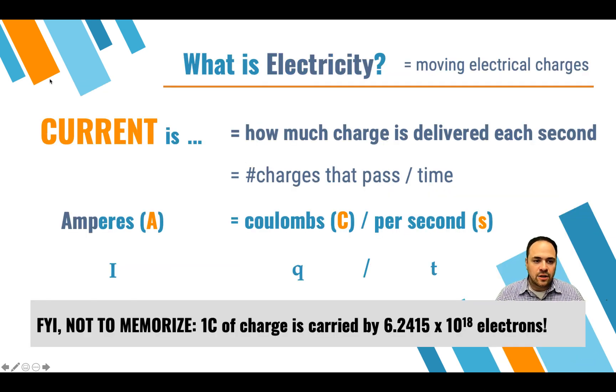So what exactly is electric current? And the definition of current is how much charge is delivered each second. We measure this in coulombs per second because we're looking at how many coulombs of charge pass a particular point in a wire or a circuit every second. So a coulomb is equivalent to the charge carried by 6.2415 times 10 to the 18th electrons. That is a lot of electrons.